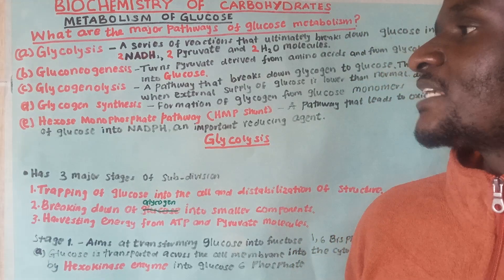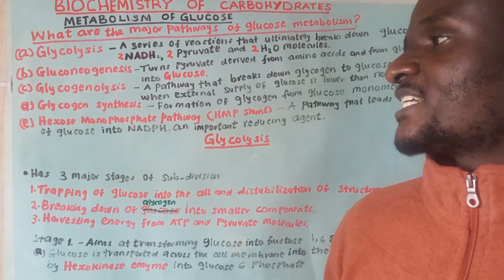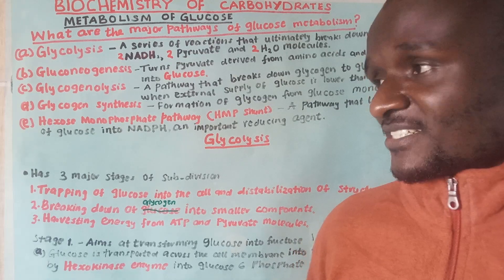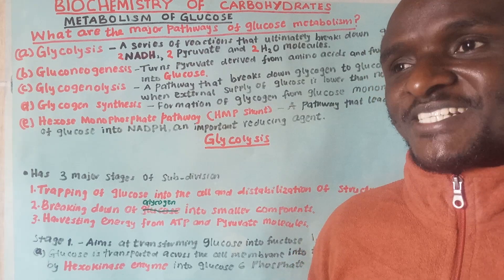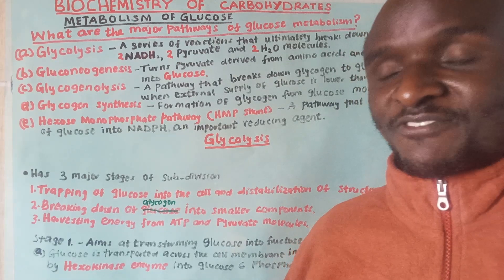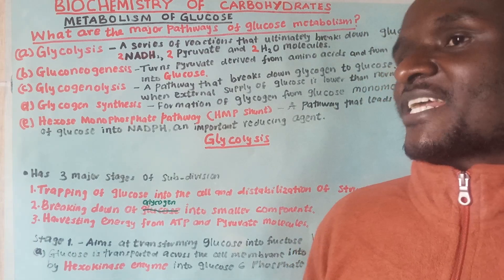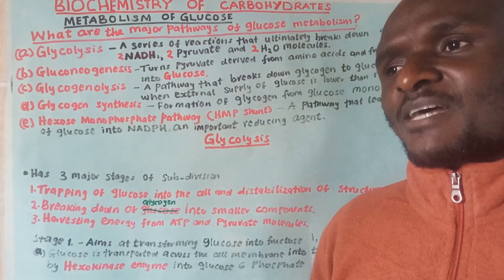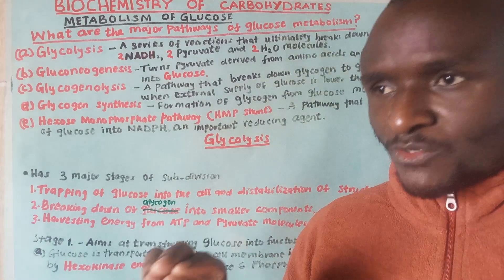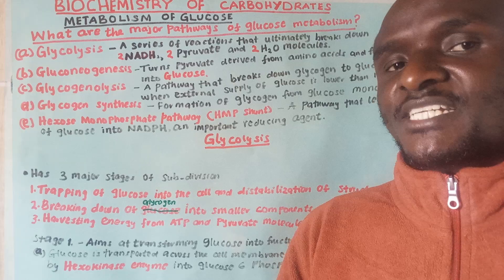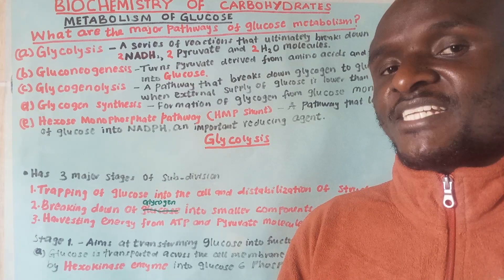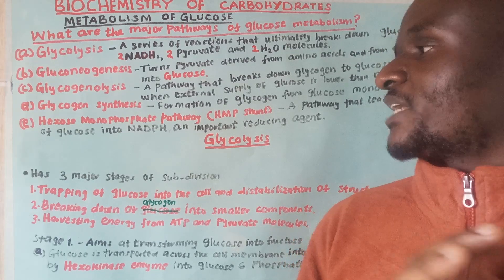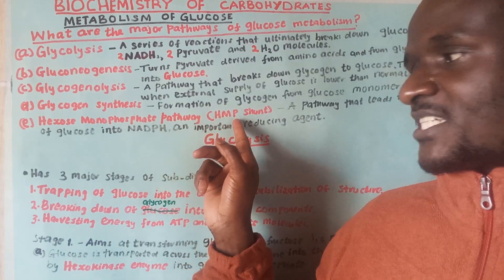Then we have glycogen synthesis, which refers to the synthesis of glycogen from glucose monomers. Another pathway is the hexose monophosphate shunt. This is a pathway that oxidizes glucose into NADPH. NADPH is a very important reducing agent — we shall be looking at the importance of NADPH when we study the hexose monophosphate shunt.